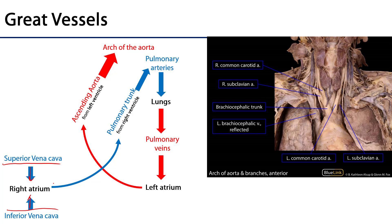That blood is then pushed through to the right ventricle, where it is pushed out through the pulmonary valve, through the pulmonary trunk, and conducted via pulmonary arteries to the lungs. It's there in the alveolar capillary beds that carbon dioxide is offloaded and oxygen is onloaded, and that richly oxygenated blood is returned from the lungs to the left atrium via pulmonary veins.